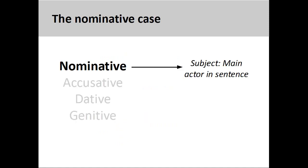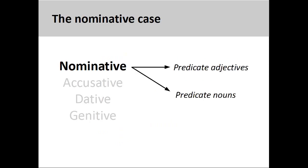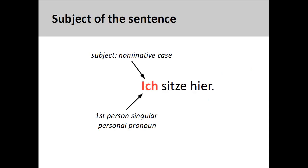The nominative case is used to mark the subject of the sentence, which is the person or thing performing the main action in the sentence. It is also used to mark the predicate adjective or predicate noun in a sentence. Let's take a look at all of these uses in turn. The subject of a sentence is always in the nominative case.